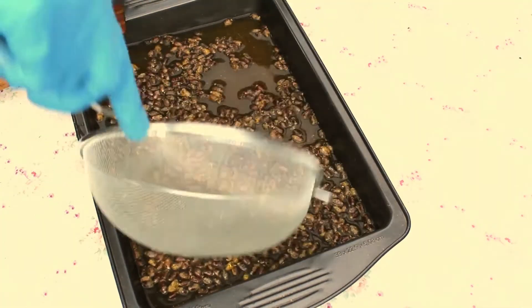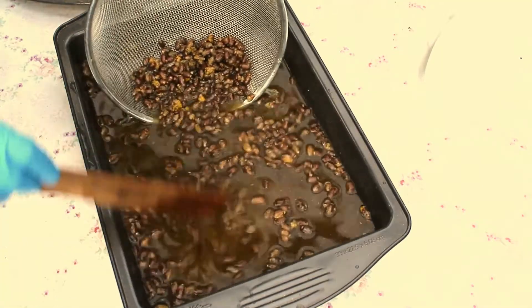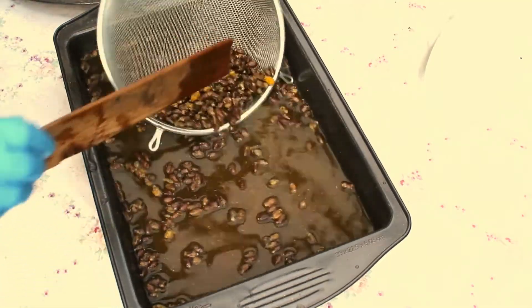After a good rinse, use a sieve to collect and remove the cocoons. The dirty water can be disposed of and the tray can be cleaned.